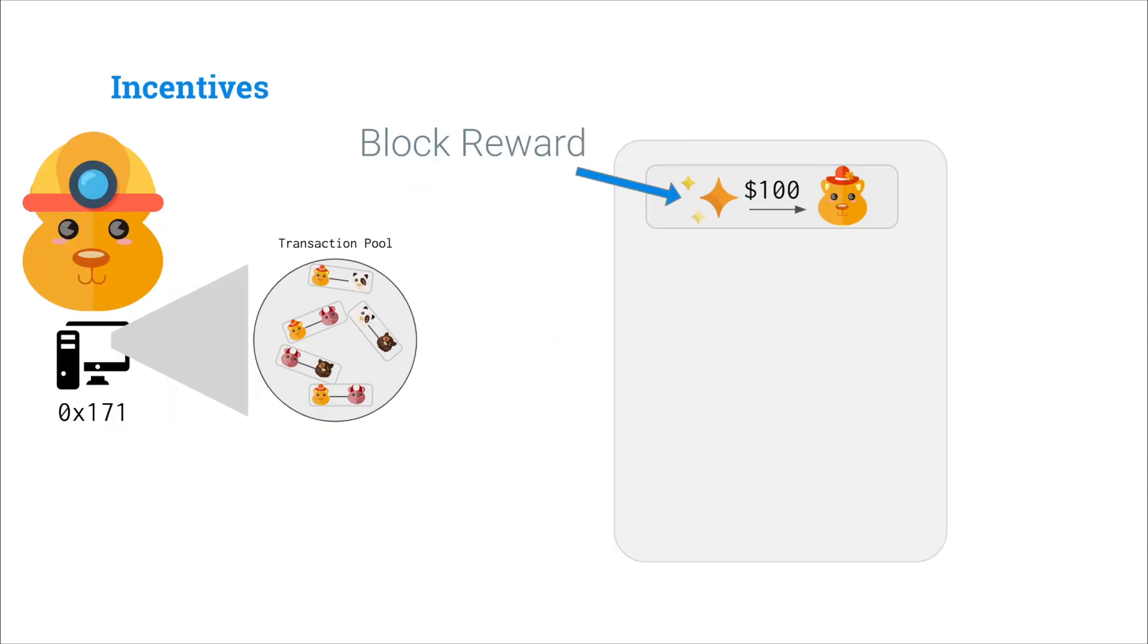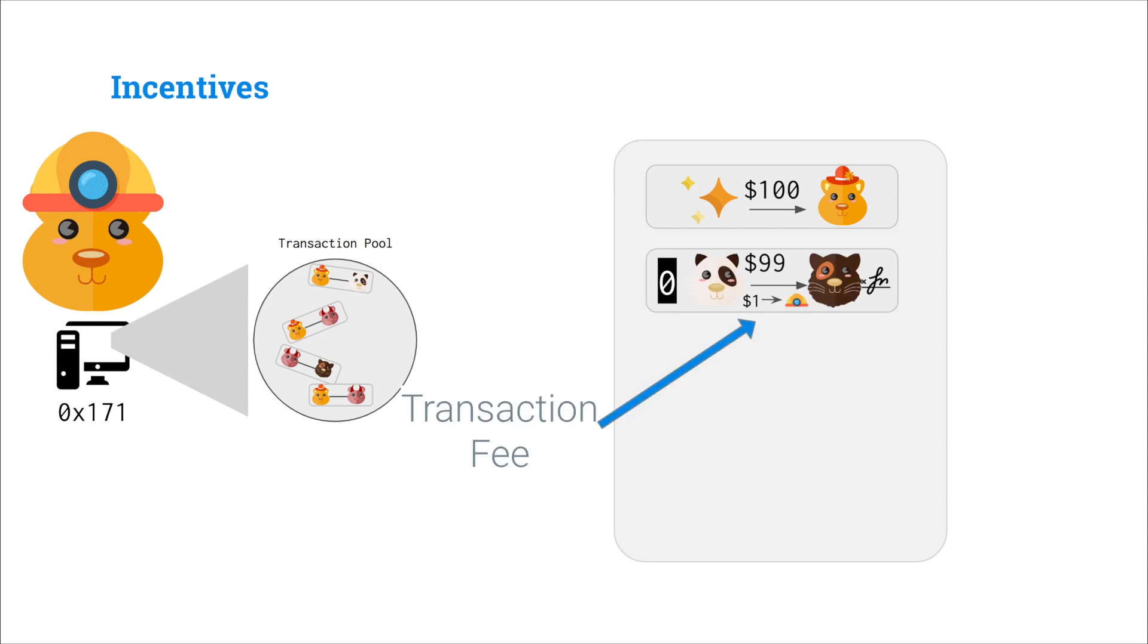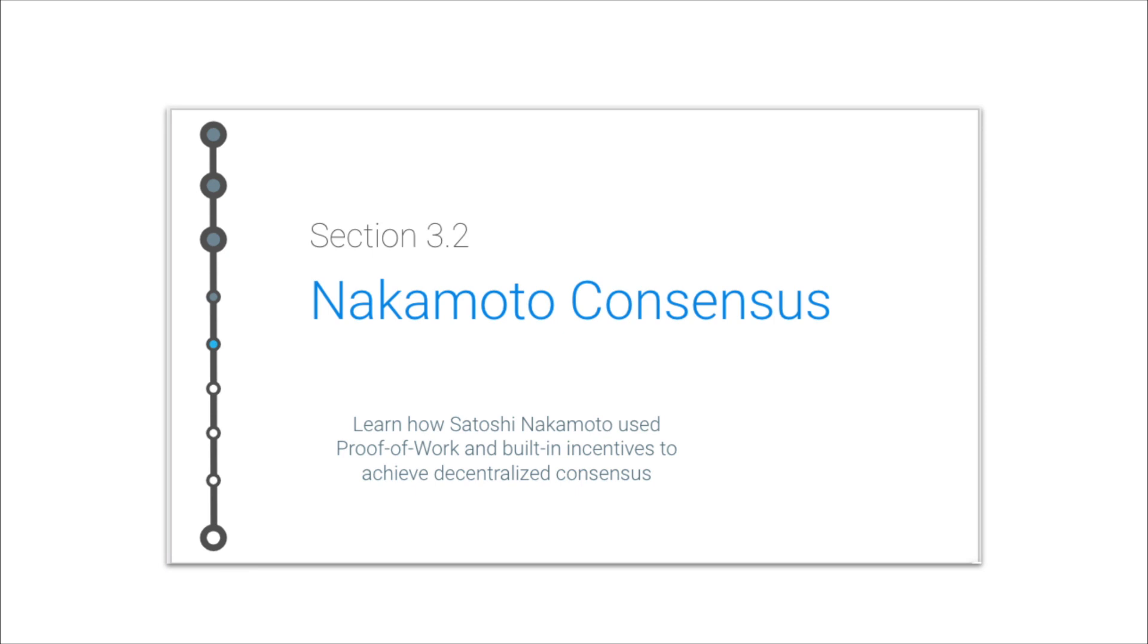And Bitcoin also introduced an interesting built-in incentive model, where because everyone's spending so much money on this hardware and electricity, there's a built-in block reward in every block that pays money to the person who mined that block. And they also get money from people trying to spend transactions to get their transactions included sooner. So we'll be covering all the specifics of how Bitcoin really pioneered this model of decentralized consensus in Section 3.2 Nakamoto Consensus.